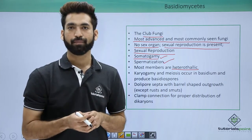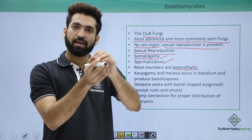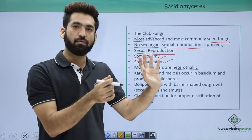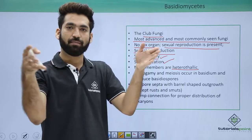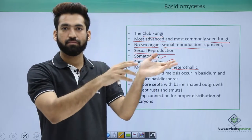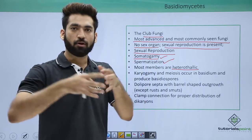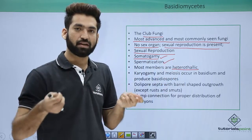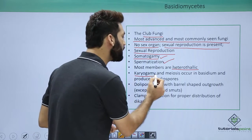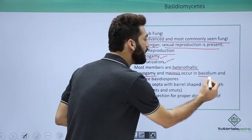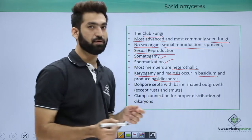Most members of Basidiomycetes are heterothallic. Homothallic means one strain carries both gametes, but in heterothallic organisms two different strains come together and fuse — one acting as male and the other as female. They are called heterothallic because the gametes come from different thalli.